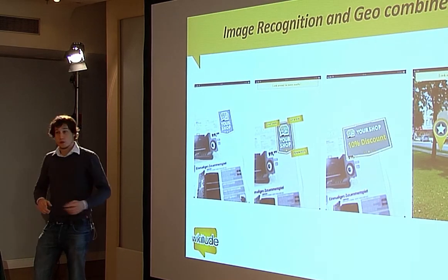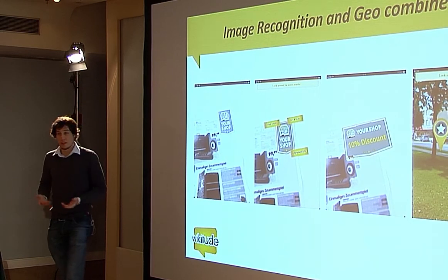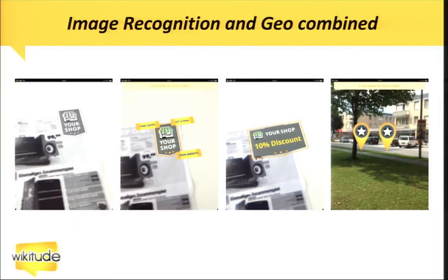We also allow combining image recognition and geo-based AR. That's useful if you have some printed materials and you want the user to scan it — you can, for example, overlay your shop logo in color with some buttons around it. One button could get the user a deal for your shop, and another button could search for nearby shop locations and have those visualized in AR so the user knows where your shops are in their surroundings. This is actually one of our examples included with the SDK.